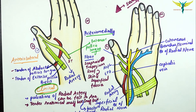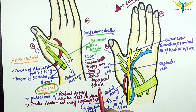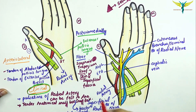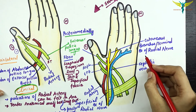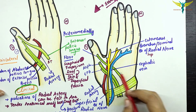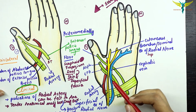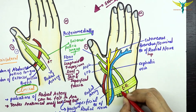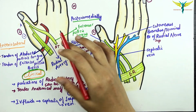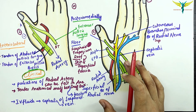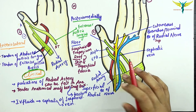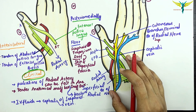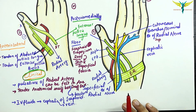The floor is formed by the scaphoid and trapezium, which are carpal bones, and the roof is formed by the skin and superficial fascia. The contents below the skin include the cutaneous or terminal branches of the superficial radial nerve, the cephalic vein, and the radial artery — which is the main content. Also present is the extensor retinaculum. Clinically, the pulsations of the radial artery can be felt here, a tender anatomical snuff box indicates a fracture of the scaphoid bone, and IV fluids are mainly given into the cephalic vein in the anatomical snuff box.